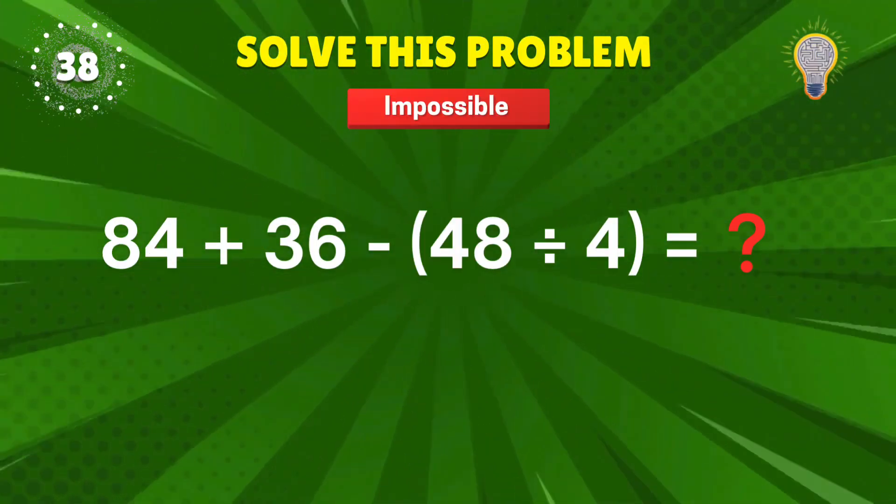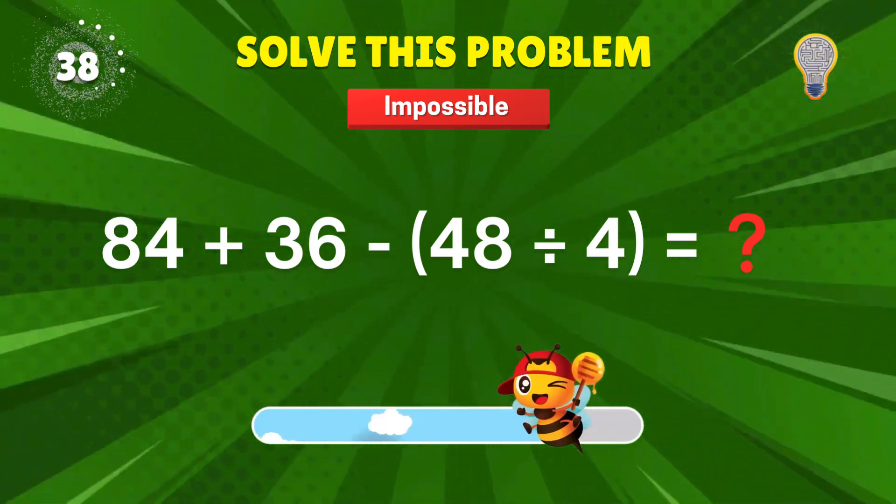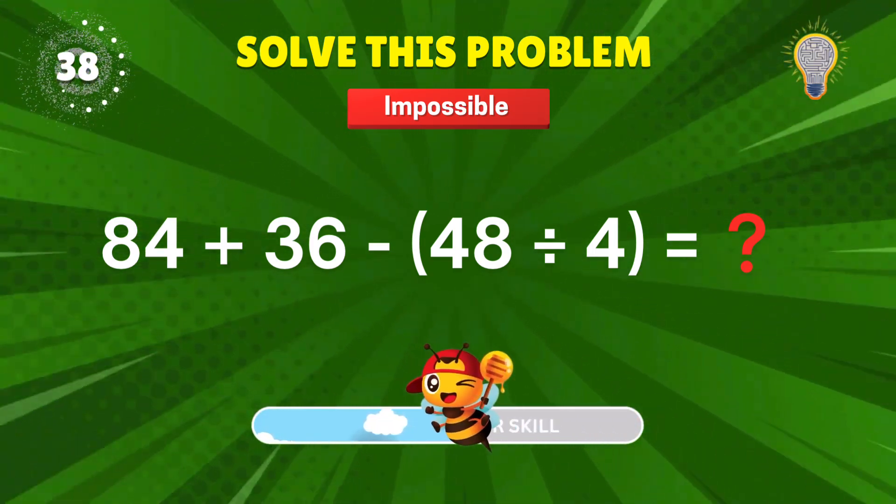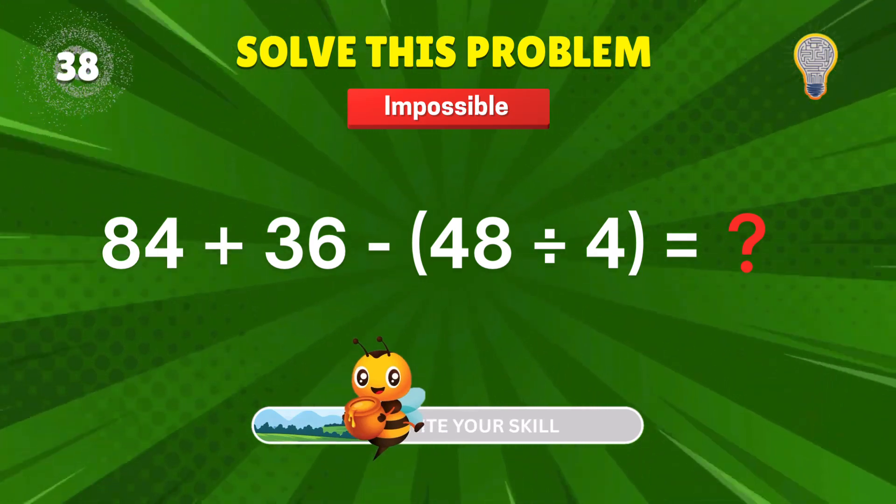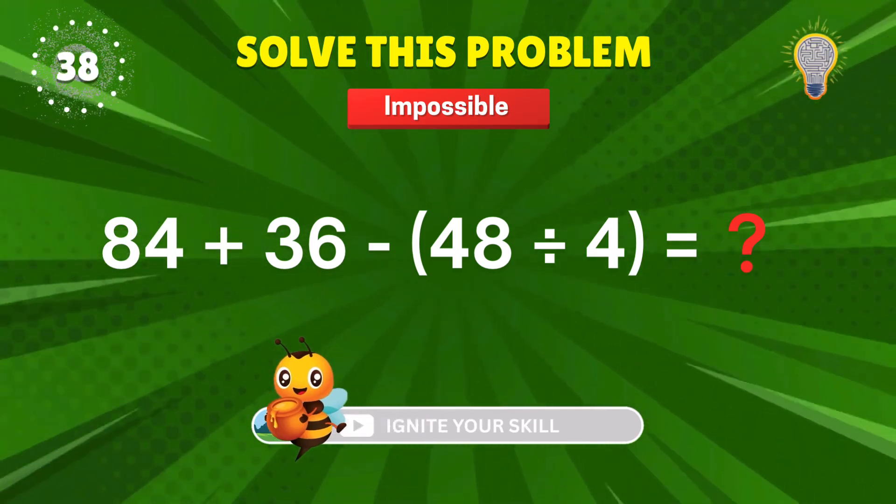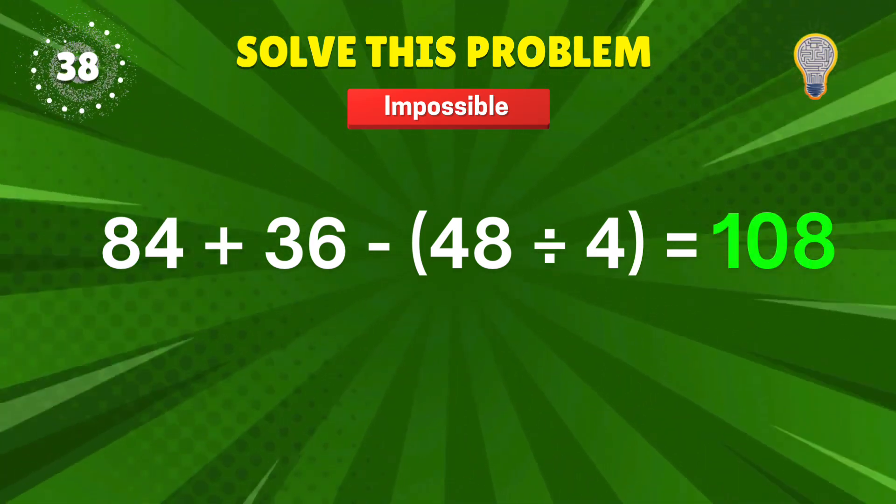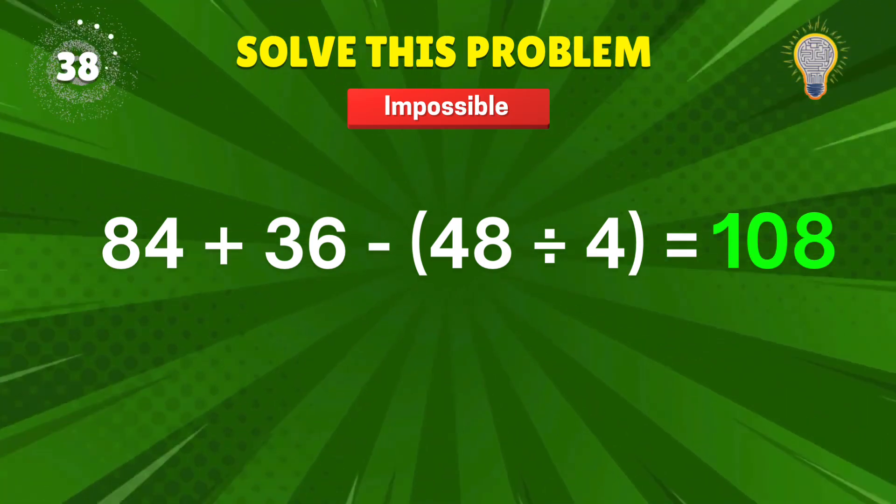84 plus 36? 48 divided by 4? Numbers doing parkour. 108. Landed it perfectly. Plus 1.